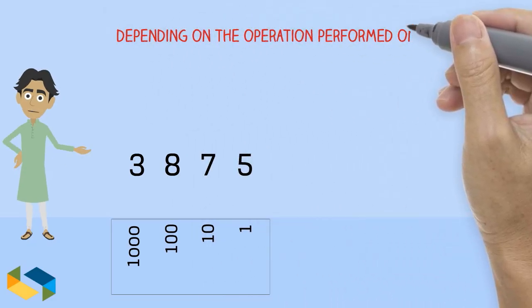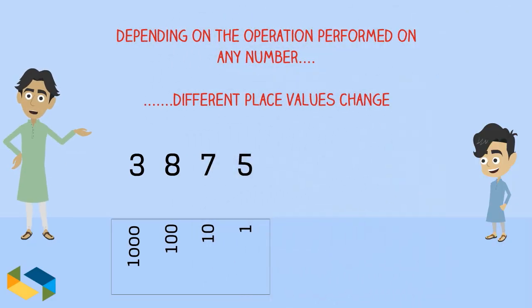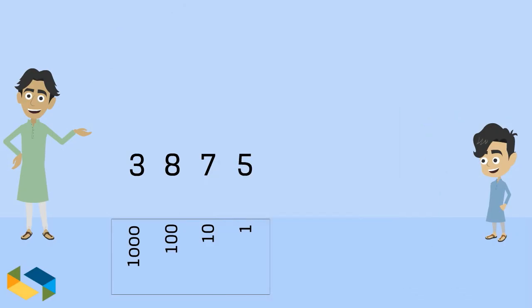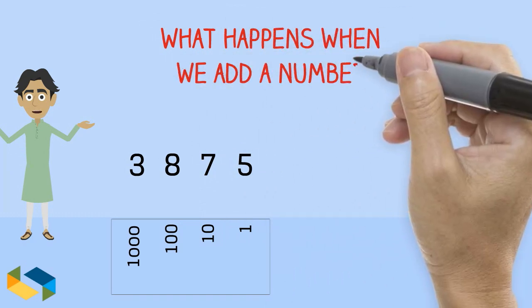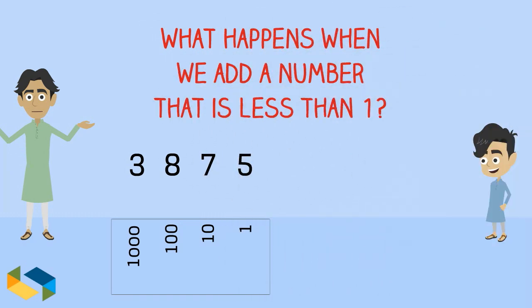So depending on what you add or subtract or execute any other operation for that matter, the respective place value of the number changes. But what if we have to add a number that is less than 1, which of these place values will be affected?